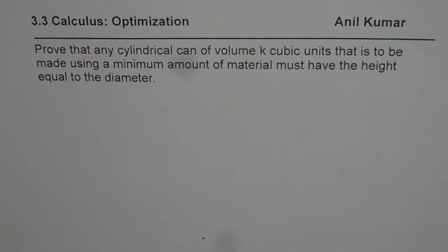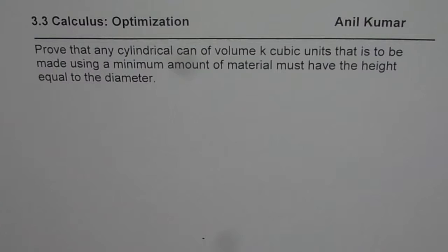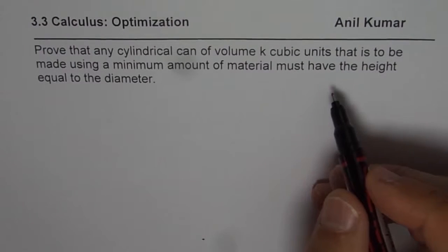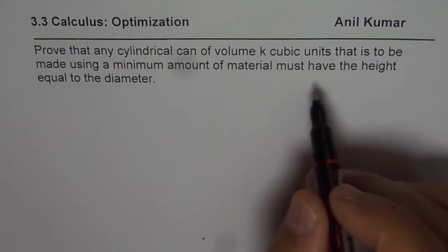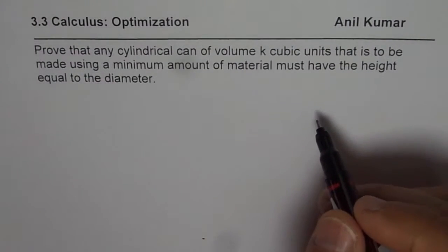I am Anil Kumar and here is another question on optimization. Prove that any cylindrical can of volume k cubic units that is to be made using a minimum amount of material must have the height equal to diameter. These general questions are very important — they give you the whole concept.